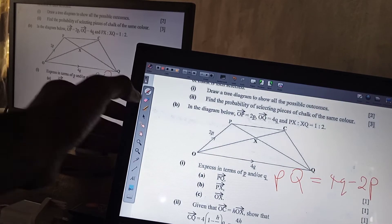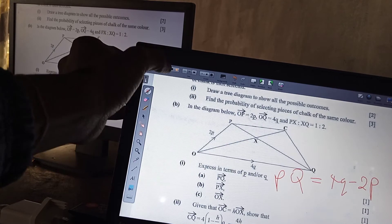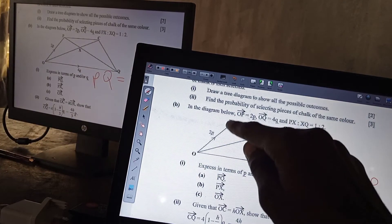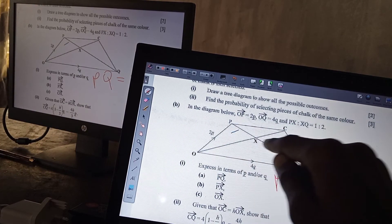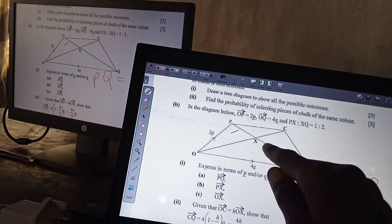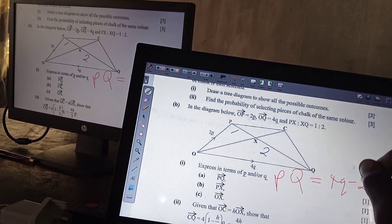Then now you've been taught that the ratio from P, this is PX is 1, and Q, XQ is 2.